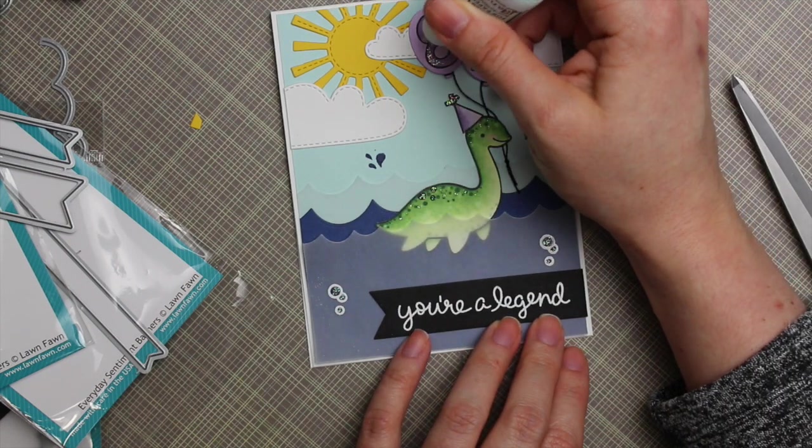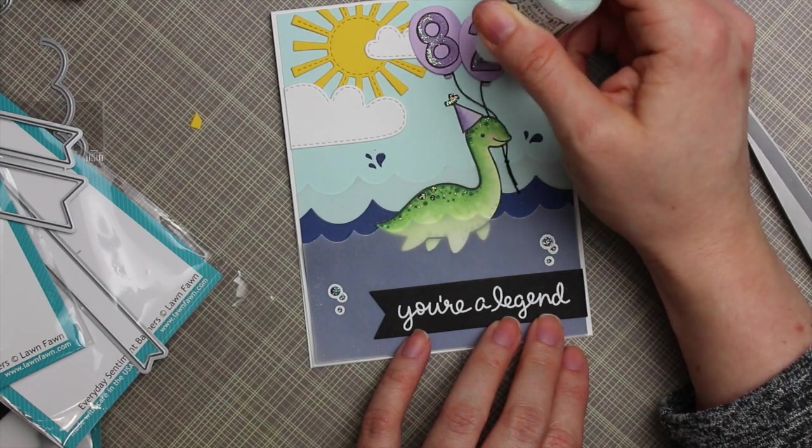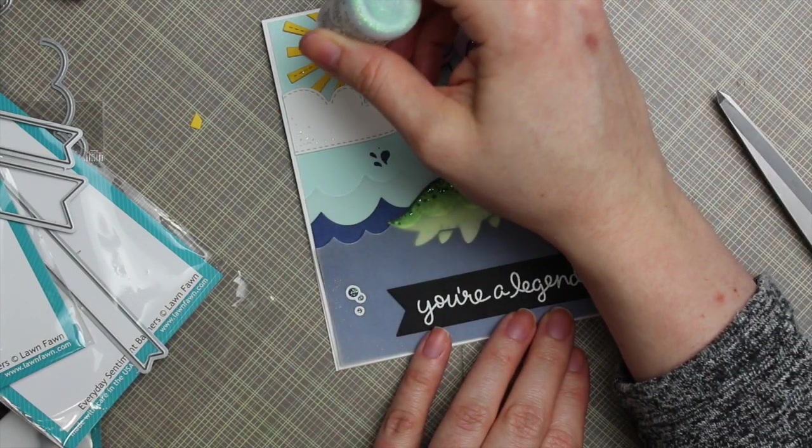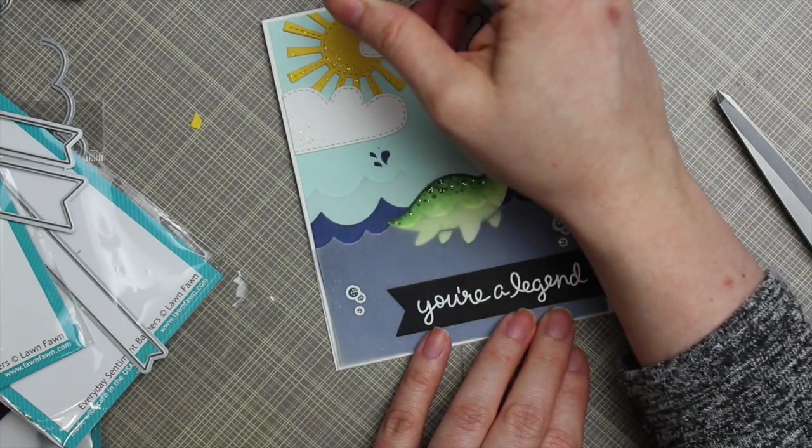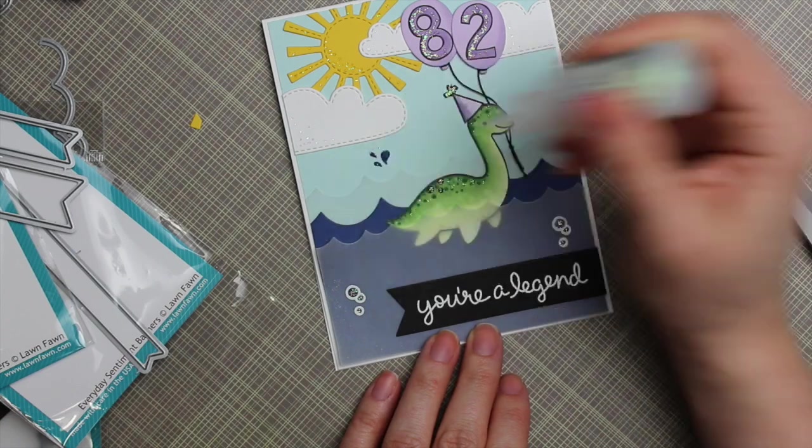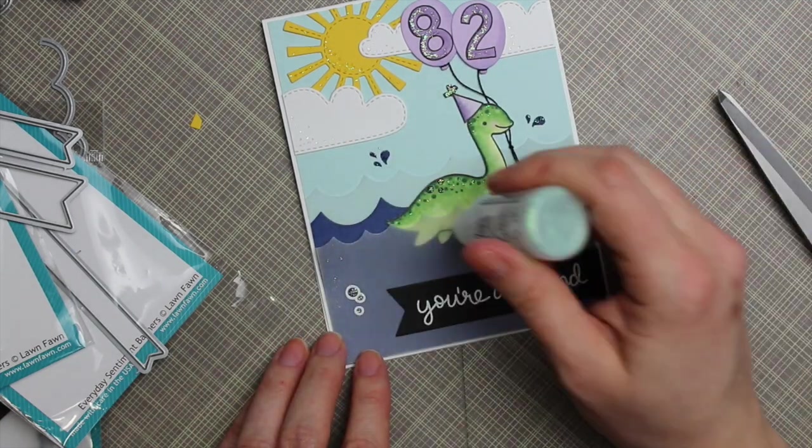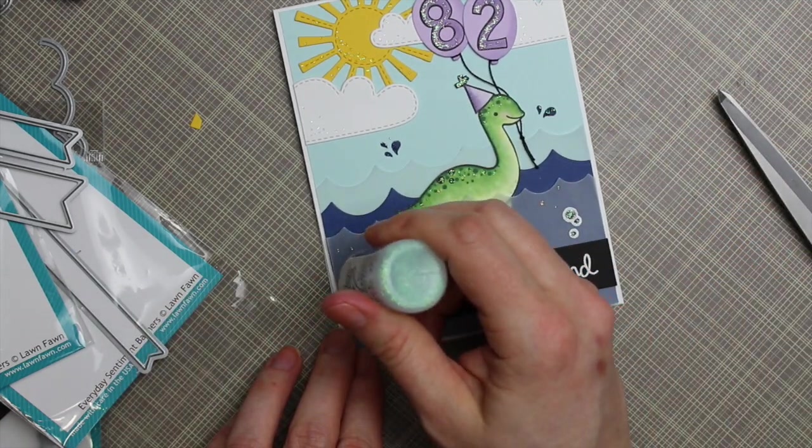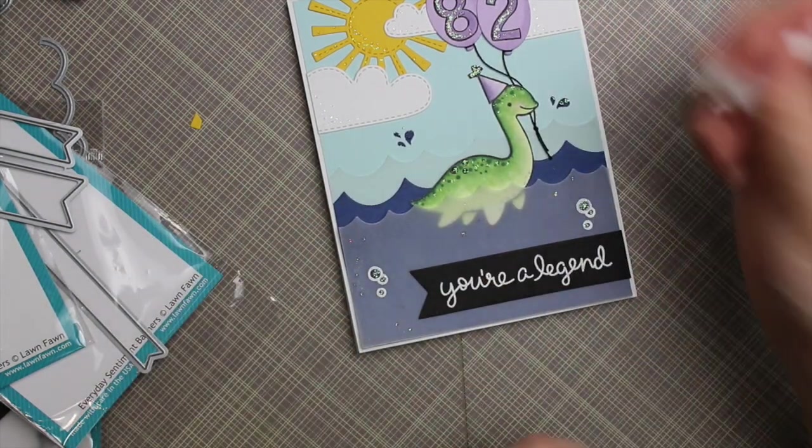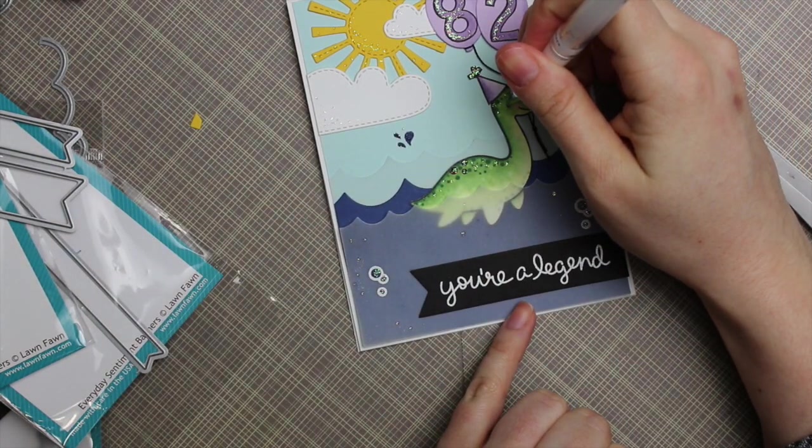I wanted to add so much sparkle. So I kind of lightly dabbed on some on the bubbles and then started adding some to the little lock us monster. And then I started dabbing on some on the sun and the cloud. I went nuts with the sparkle, but rather than like thickly coating everything with a big blob of stickles, I just did really light little dabs. So one, it dries quickly and two, it doesn't look like a total, you know, glitter throw up all over my card.